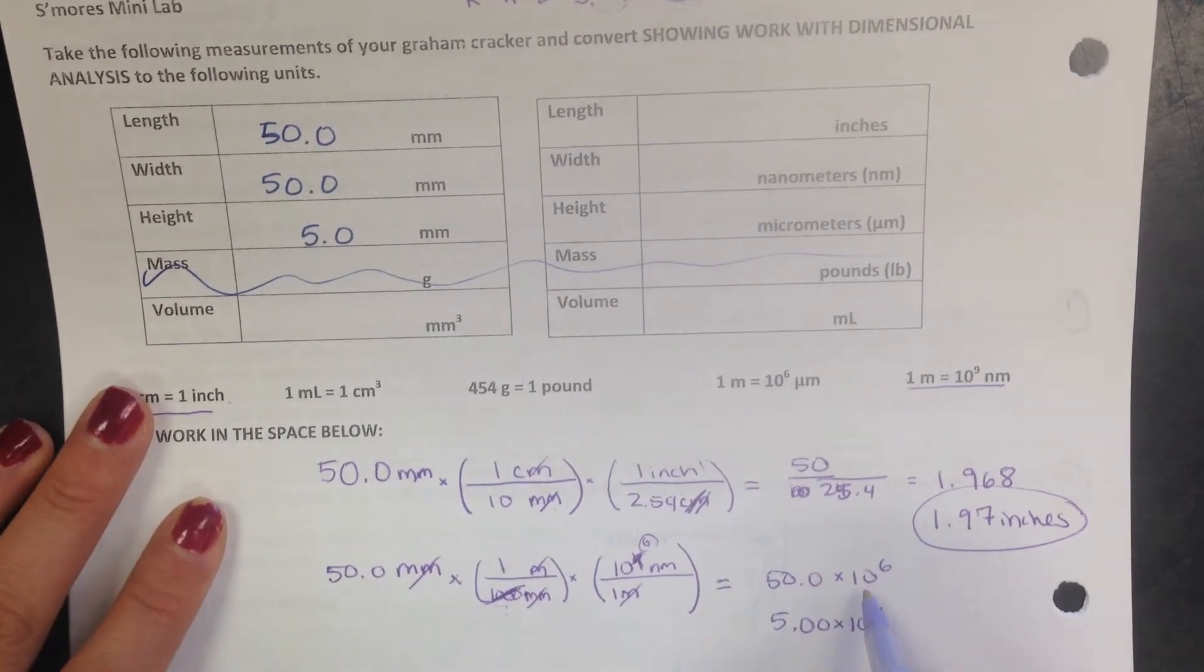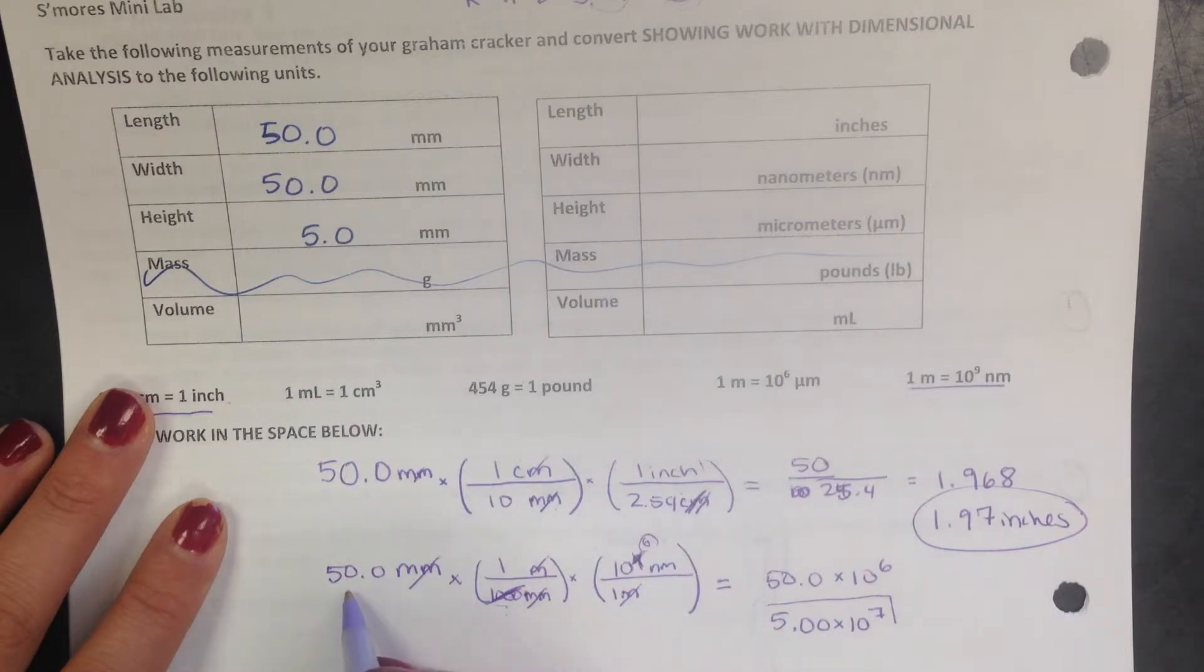But that's not proper scientific notation. You can only have one number in front, so I write my answer as five with three sig figs, because there were three sig figs here, times 10 to the seventh. And the units are nanometers.